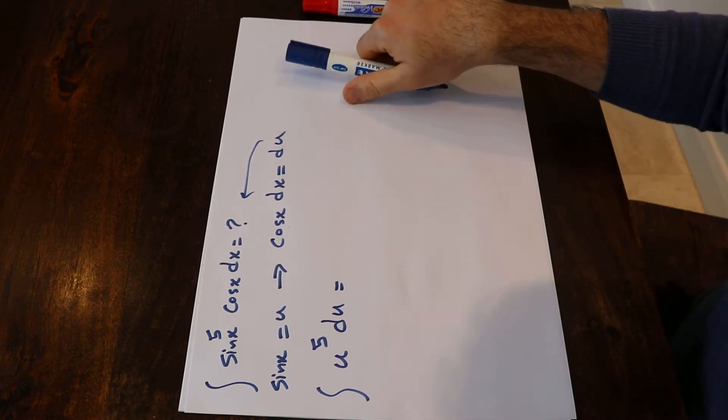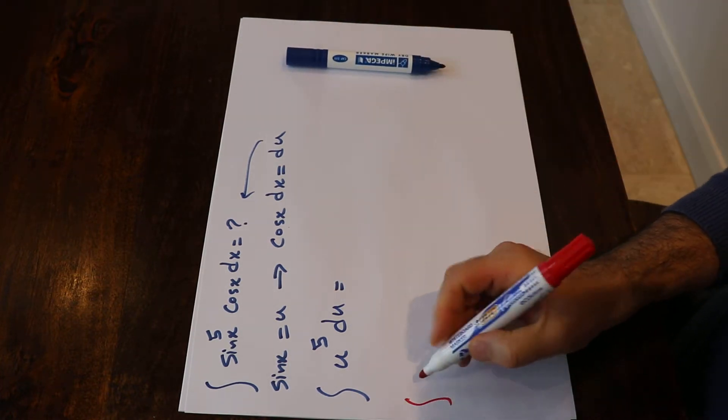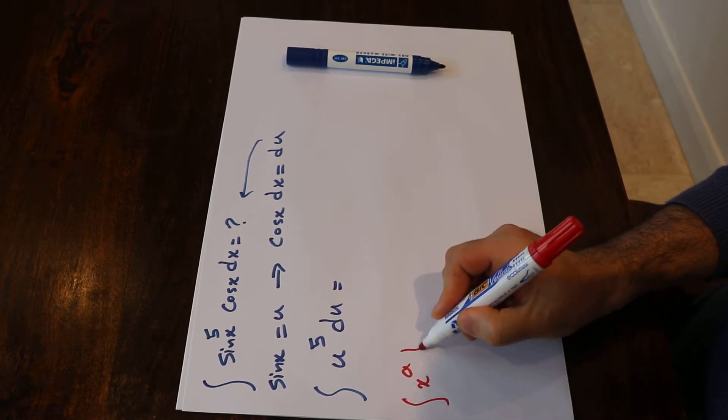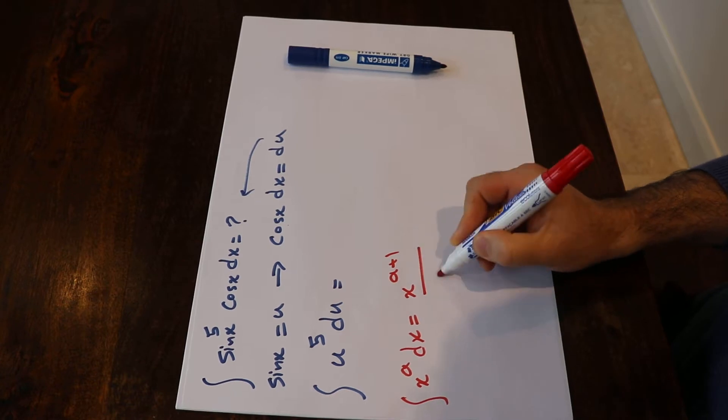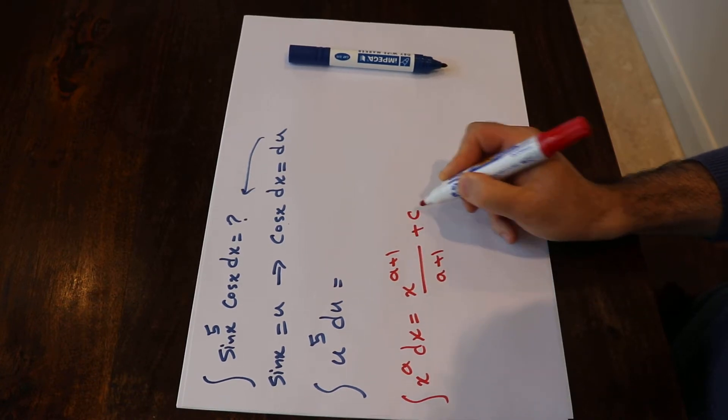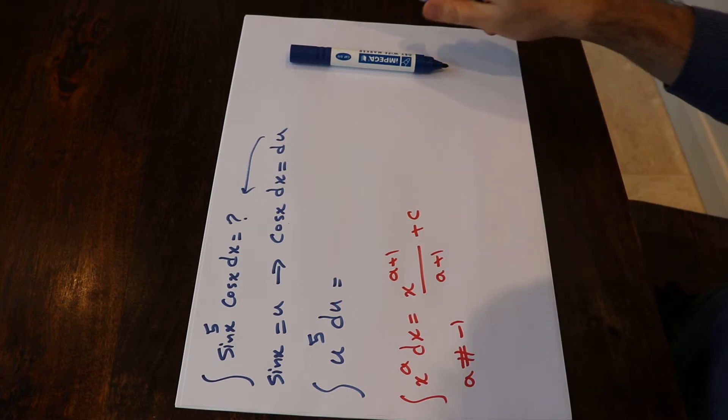And to solve this integral you need to know one formula: the integral of x to the power of a dx will be equal to x to the power of a plus 1 divided by a plus 1 plus c, assuming a is not equal to minus 1.